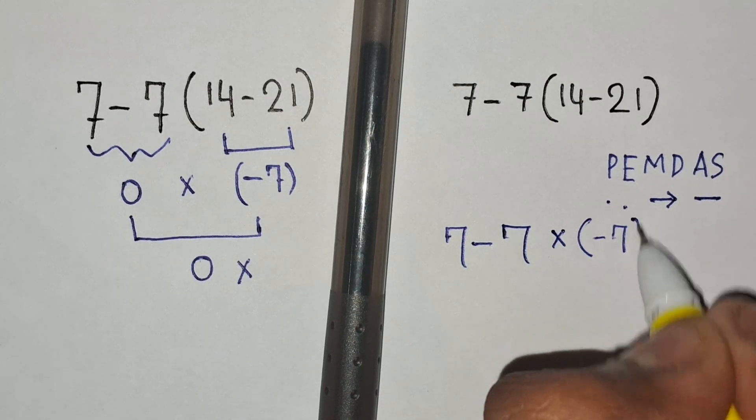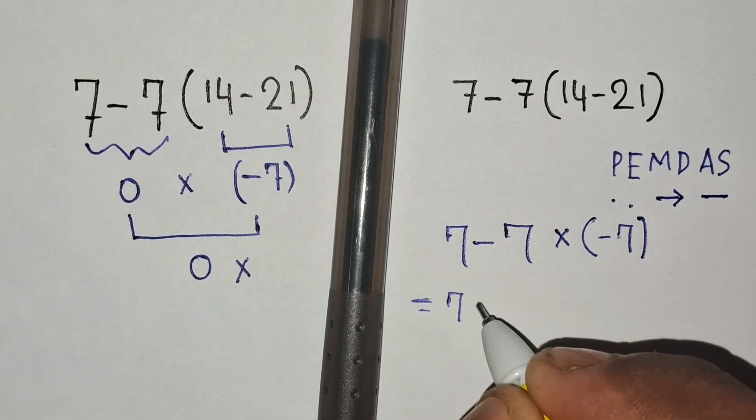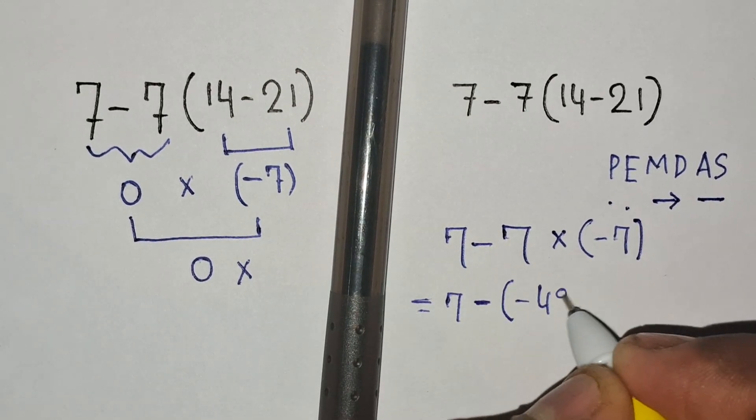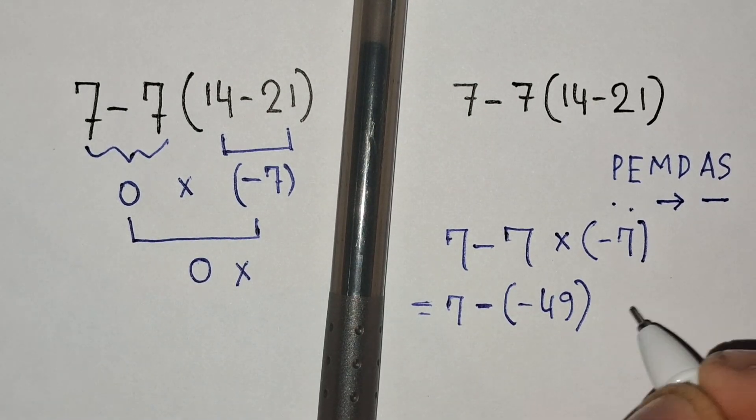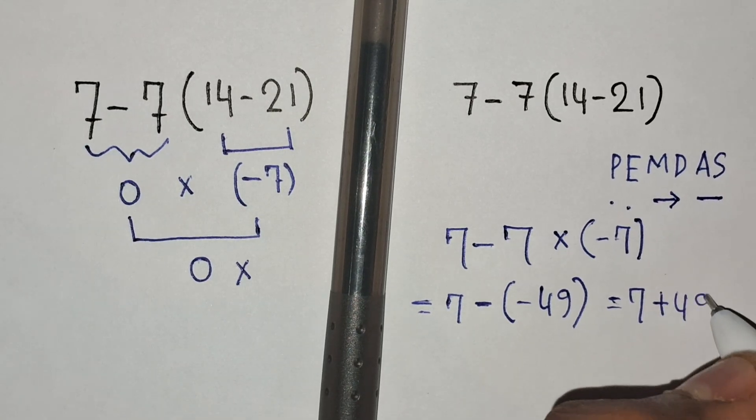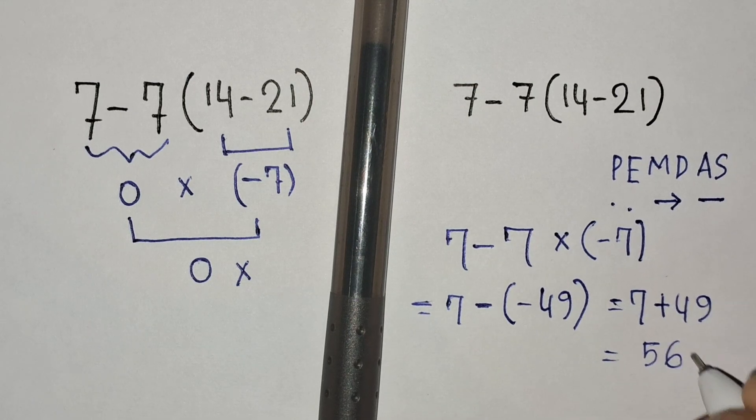14 minus 21 is equals to negative 7. So 7 minus 7 times negative 7 is equals to negative 49. So 7 minus negative 49, negative times negative equals positive, is 7 plus 49, which is equals to 56. That's the correct answer for the expression.